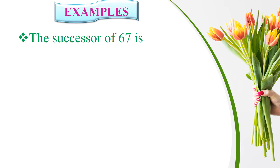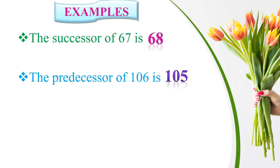Examples: The successor of 67 — successor means we add one, so 67 plus one equals 68. The predecessor of 106 — predecessor means we subtract from that number, so 106 minus one equals 105.